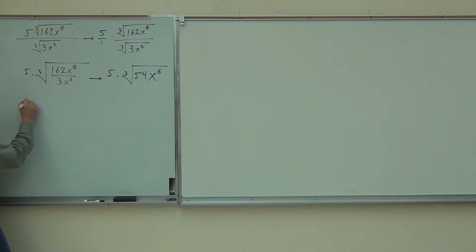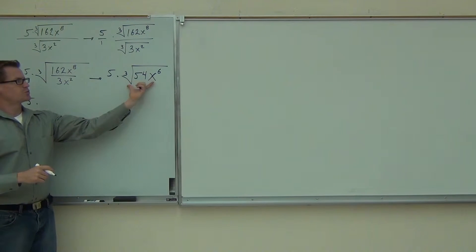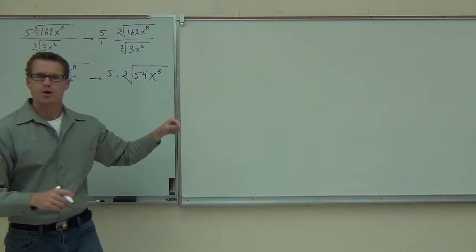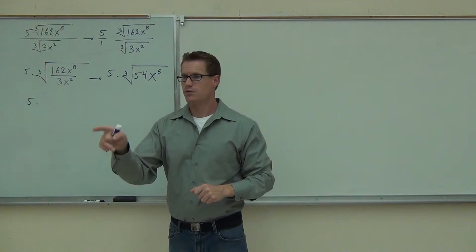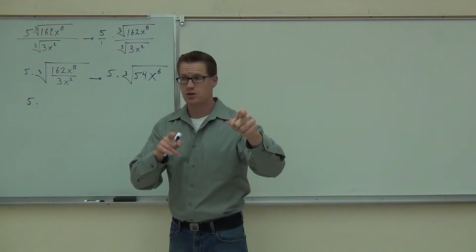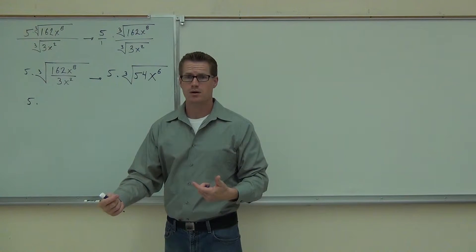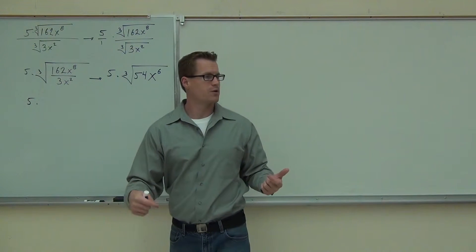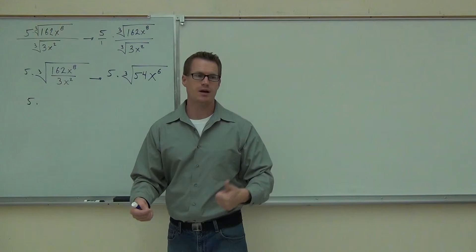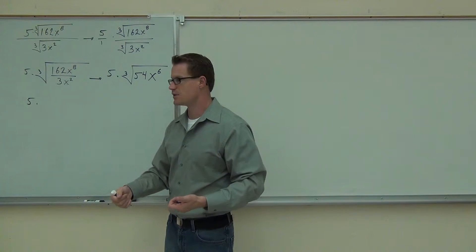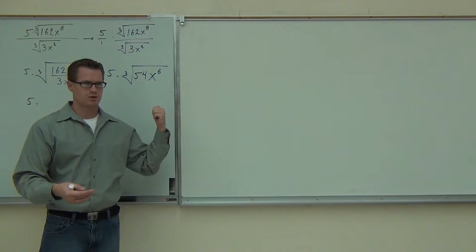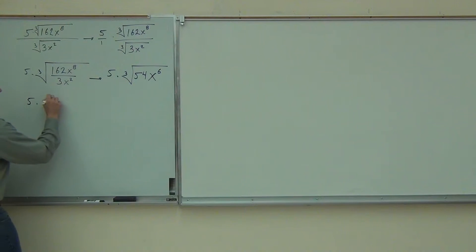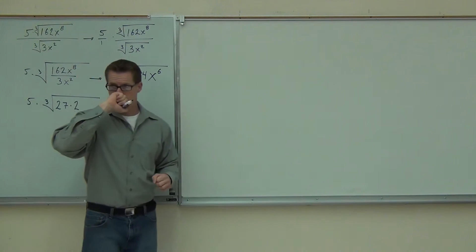Let's go ahead and finish this off. I'm going to leave that 5 out there still — just hanging out, 5 times — and then the cube root of 54x to the 6th. I haven't lost my cube root the whole way through; you can't lose your cube root. We're going to look for 54. Can you think of a perfect cube that divides 54? 27 — sure, that's a perfect cube. We're looking for perfect cube numbers: 8, 27, or 64. Only 8 and 27 are choices since 64 is too big. 8 doesn't go into 54, but 27 does.